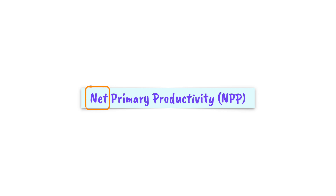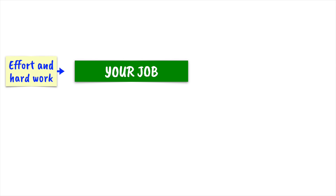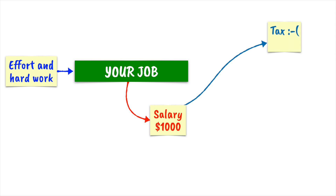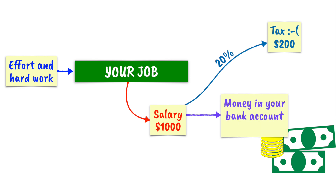I'll give you an analogy. Let's say you have a job, and for your effort and hard work, you get paid $1,000 US dollars. That's the amount that leaves your employer's bank account for you, but sadly, you have to pay tax. Maybe where you live, you have to pay 20% tax. So $200 of your money goes to the government, and you never see it. What actually ends up in your bank account — the bit you can really observe and make use of — is the remaining $800. This $800 that you actually get is called your net income. The total $1,000 that your employer paid is called your gross income.